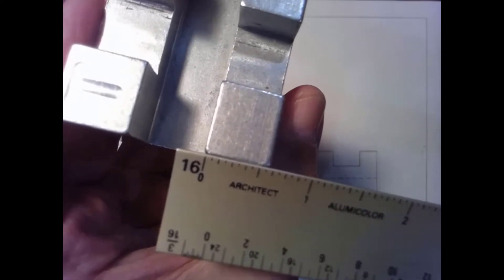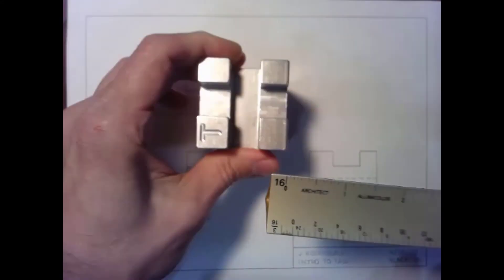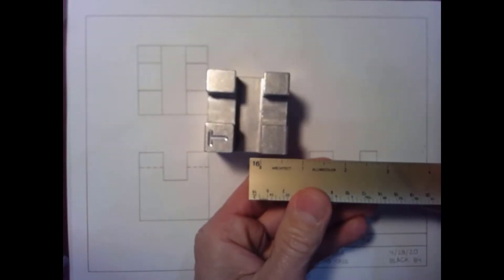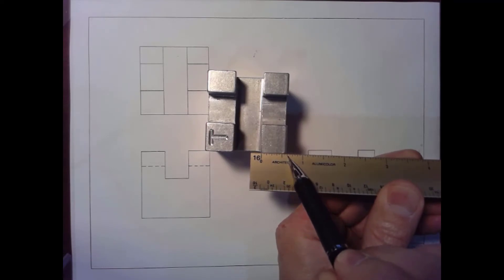And in this case, you'd have to count the sixteenths in order to measure this section. One, two, three, four, five, six, seven, eight, nine, and this is actually ten sixteenths, which is five eighths.